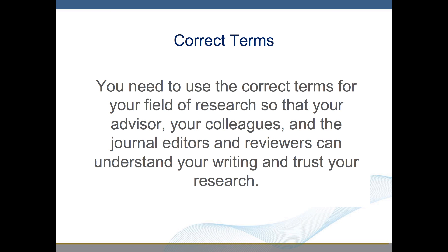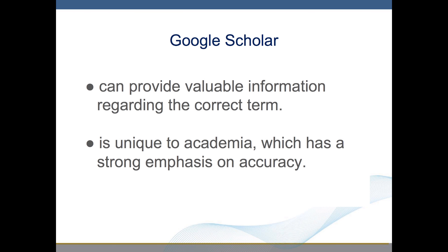You need to use the correct terms for your field of research so that your advisor, your colleagues, and the journal editors and reviewers can understand your writing and trust your research. The Google Scholar website can provide valuable information regarding the correct term. Google Scholar is unique to academia, which has a strong emphasis on accuracy.